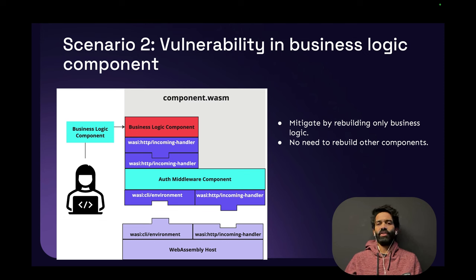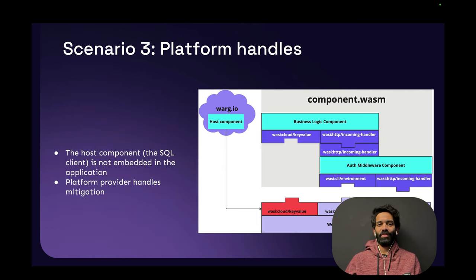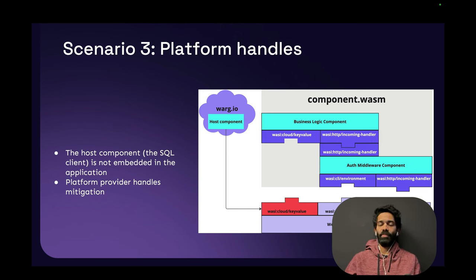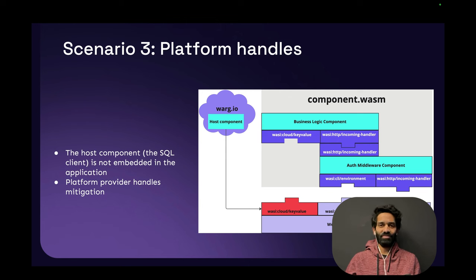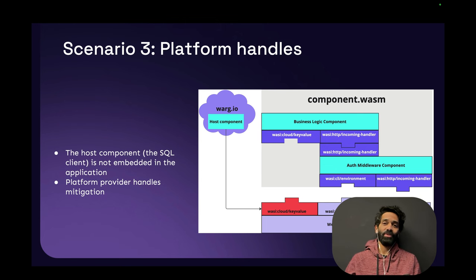Let's look at scenario three where there is some problem in the platform itself — say your key-value store in your WebAssembly cloud is down. The host component, which is an SQL component, is not embedded in the application; the platform provider handles and mitigates this problem. Whoever is giving you the cloud — like Fermion cloud — will fix this, and your entire program works as is. Your auth middleware is not affected, your business logic is absolutely not affected, because of the componentized nature of how this program is built.